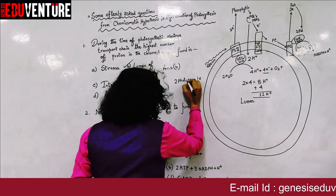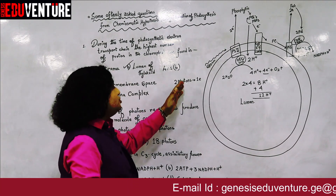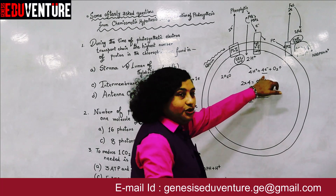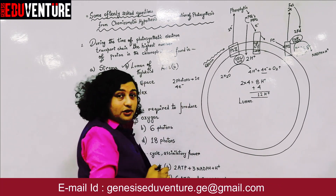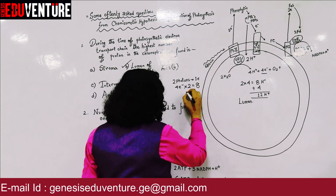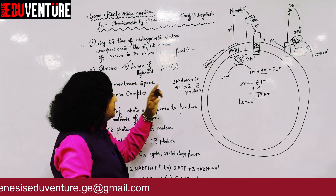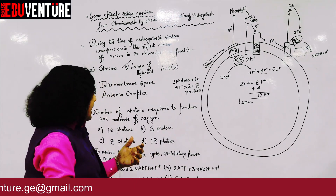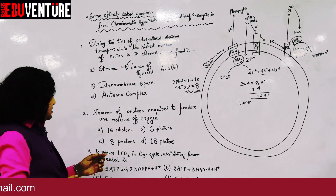Two photons are required to release or transfer one electron from PS2 to PS1. Photolysis of water produces four electrons. To transfer four electrons, the number of photons required is 4 × 2 = 8. So eight photons are required for transfer of four electrons from PS2 to PS1, and therefore to produce one molecule of oxygen. The answer is 8 photons.